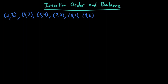So how does insertion order actually influence the balance? Well, let's say these are some points that I want to insert into a KD tree. I've arbitrarily ordered them in increasing order of x coordinate. And let's see what would happen if I just happened to insert them in this order.